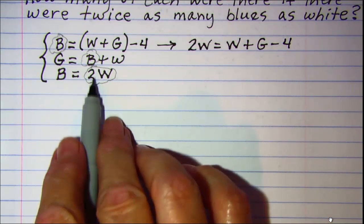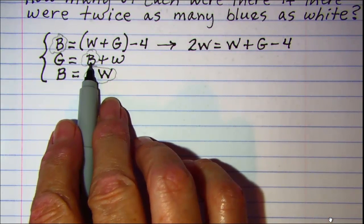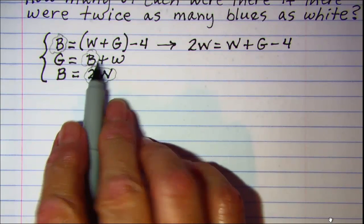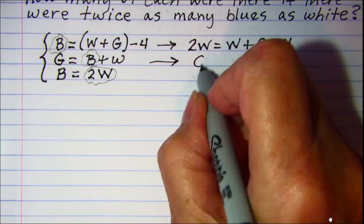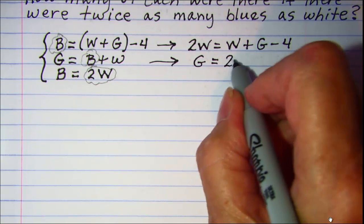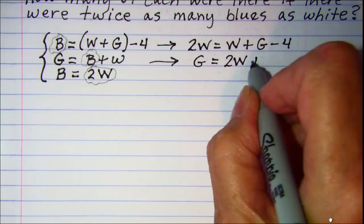W plus G minus 4. And then also let's substitute into the second equation in place of B. I'll put 2W, so this one becomes G is equal to 2W plus W.